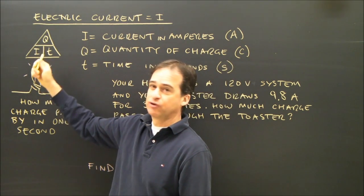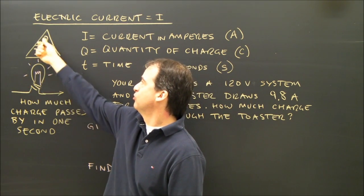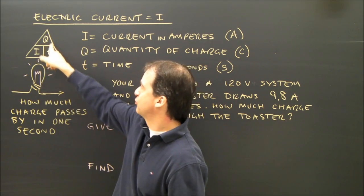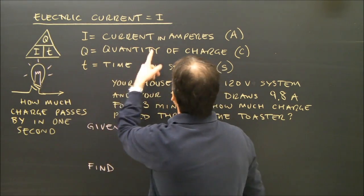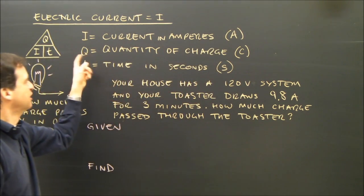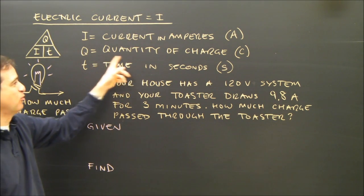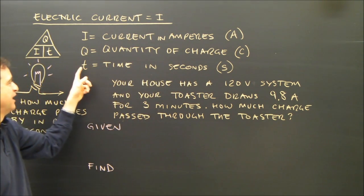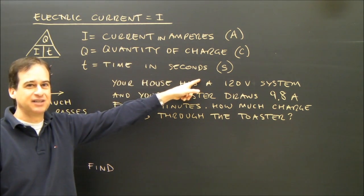The formula for current is I, Q, and T. So it's I equals Q over T. I represents the current in amperes. Q, as we know from before, quantity of charge in coulombs. And T is time, and it's got to be in seconds.